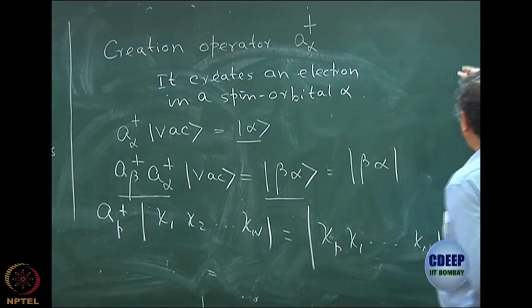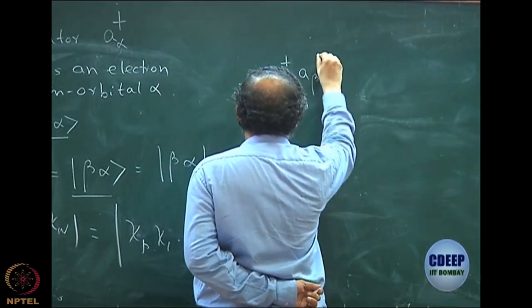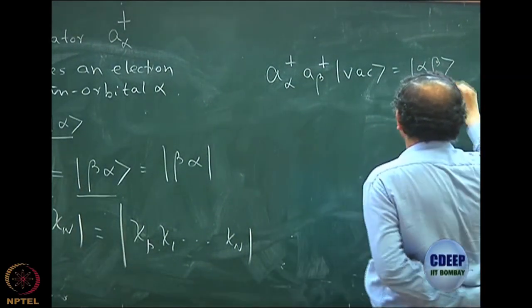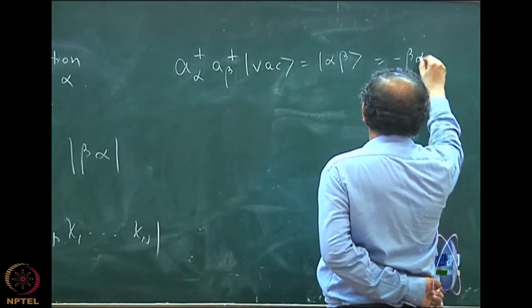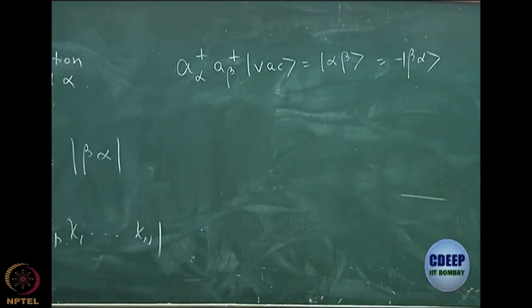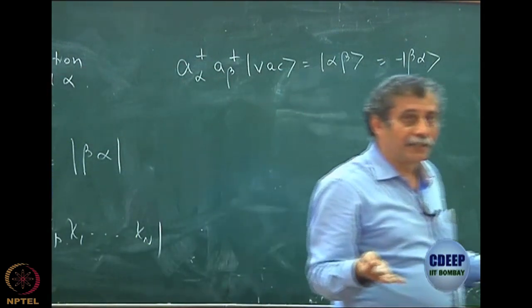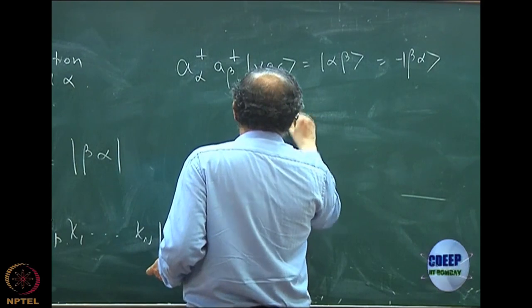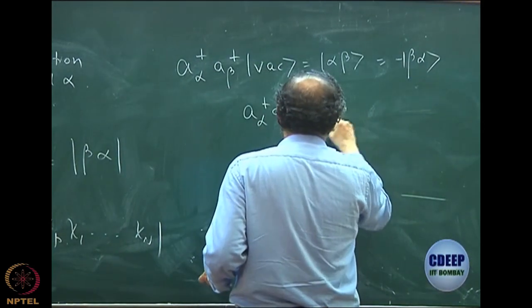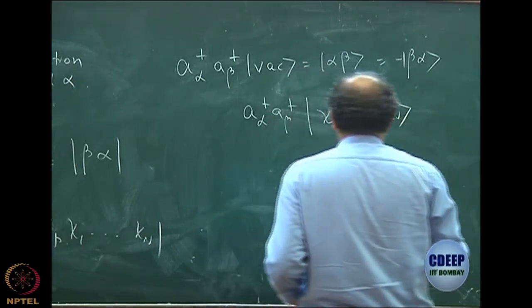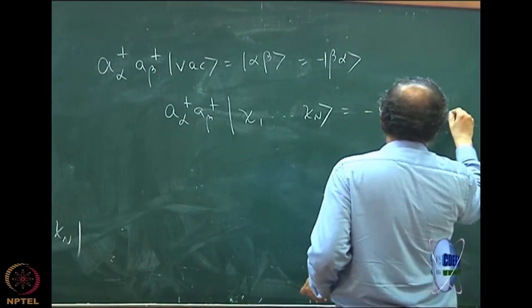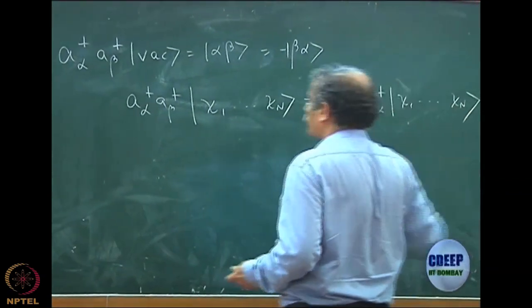If I had created a†_α a†_β on a vacuum, this would give |αβ〉, which should be the negative of |βα〉. So in general, if I have a†_α a†_β acting on an n-particle determinant |χ₁, χ₂, ..., χₙ〉, this is the negative of a†_β a†_α acting on the same determinant. Because in one case beta will come first and alpha second, and in the other it is reversed, so there must be a sign change.